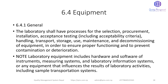6.4 Equipment — 6.4.1 General: The laboratory shall have processes for the selection, procurement, installation, acceptance testing including accessibility criteria, handling, transport, storage, use, maintenance, and decommissioning of equipment in order to ensure proper functioning and to prevent contamination or deterioration. Laboratory equipment includes hardware and software of instruments, measuring systems, laboratory information systems, or any equipment that influences the results of laboratory activities, including sample transportation systems.